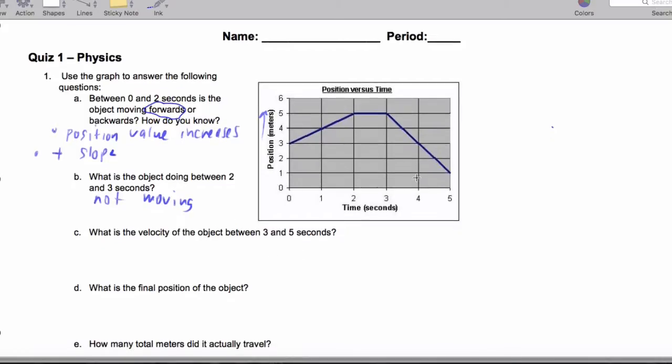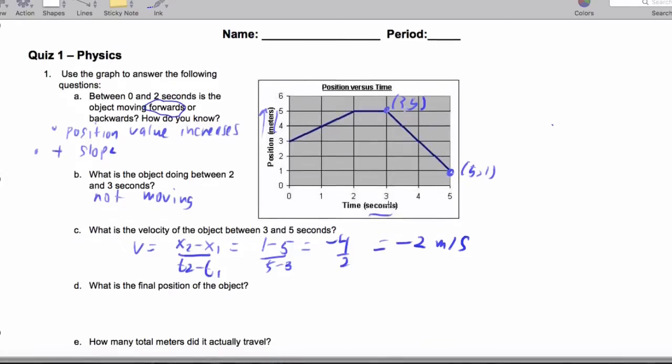And then the velocity between 3 and 5 seconds, we're going to get the slope. So this is 0.51, this is 0.35. And so to get the velocity, we're going to use the rise over run, which is x2 minus x1 over t2 minus t1. So we're going to end up getting 1 minus 5 over 5 minus 3. This is negative 4 over 2, which works out to negative 2 meters per second. The units are the units of the rise divided by the units of the run.